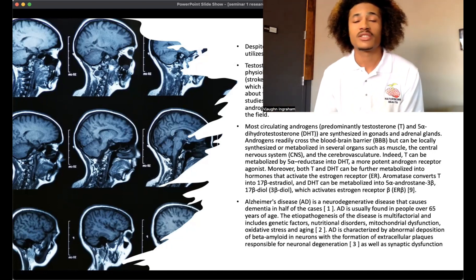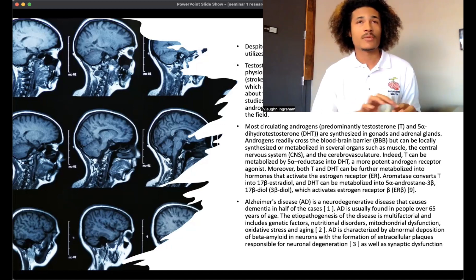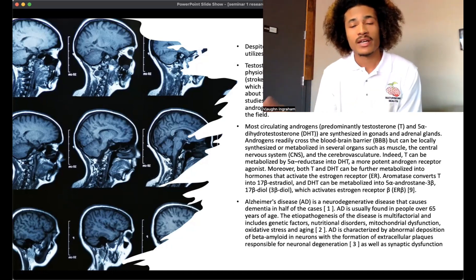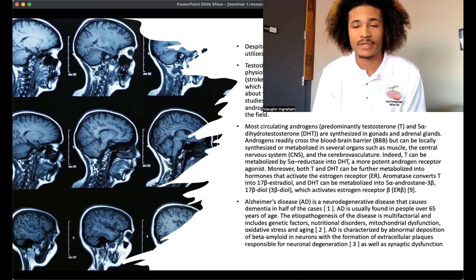AD is characterized by abnormal deposition of beta amyloid in neurons with the formation of extracellular plaques responsible for neurodegeneration. This could look in many ways, like the myelin sheath could degrade, and myelin sheath helps with neural impulses transmitting and insulates the axon. The axon is the middle part of the neuron cell.